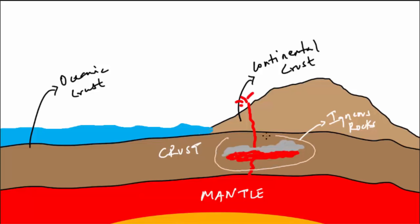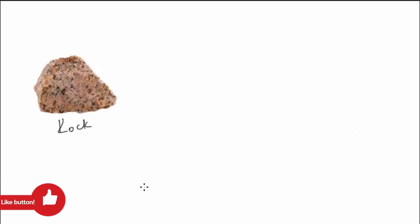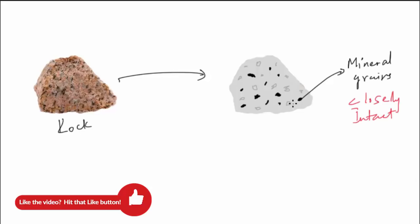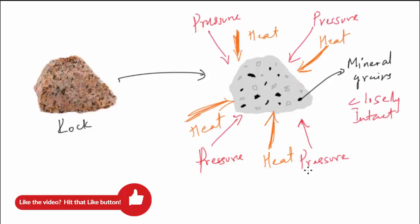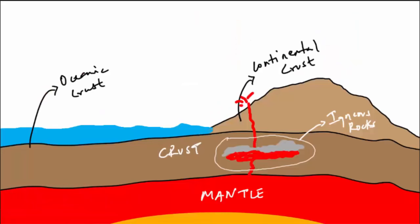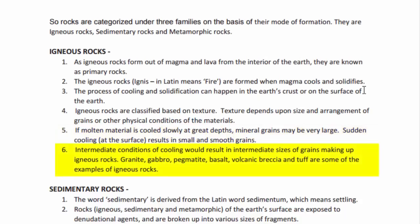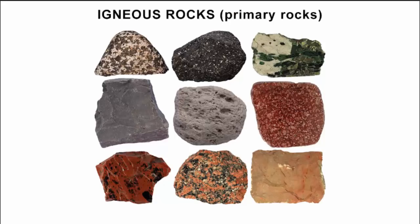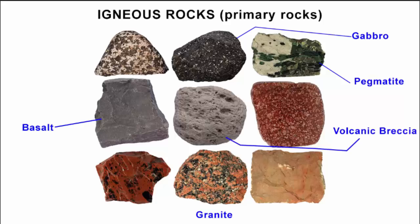When magma cools under the crust, it becomes solid but does not get exposed to external weathering agents like wind, river, and ice. Because of that, the mineral grains do not break — they are intact. There is also huge pressure and abnormal temperature under the crust, so igneous rocks formed at great depth tend to be very large in size. The pressure and temperature keep the mineral debris from splitting apart. Intermediate cooling conditions result in intermediate grain sizes.